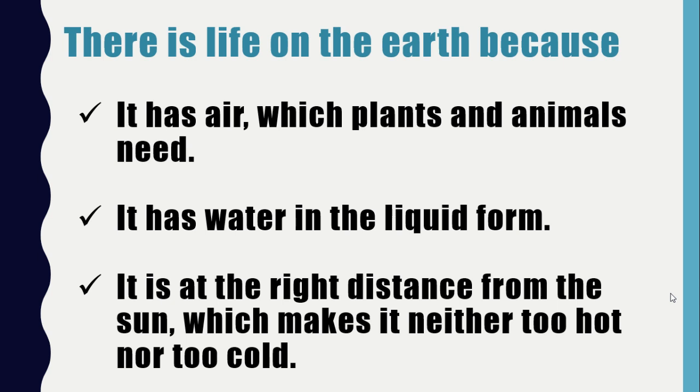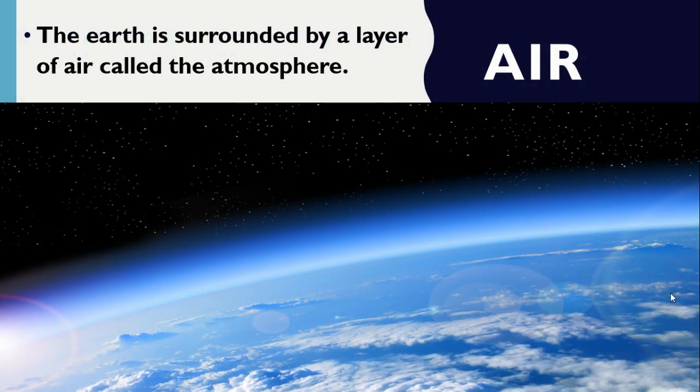Let us revise. There is life on the Earth because it has air which plants and animals need. It has water in the liquid form. It is at the right distance from the Sun, which makes it neither too hot nor too cold. Had it been as close to the Sun as Mercury, it would have been very hot — so hot that its water would have turned into steam. Had it been as far away as Neptune, its water would have frozen to ice.